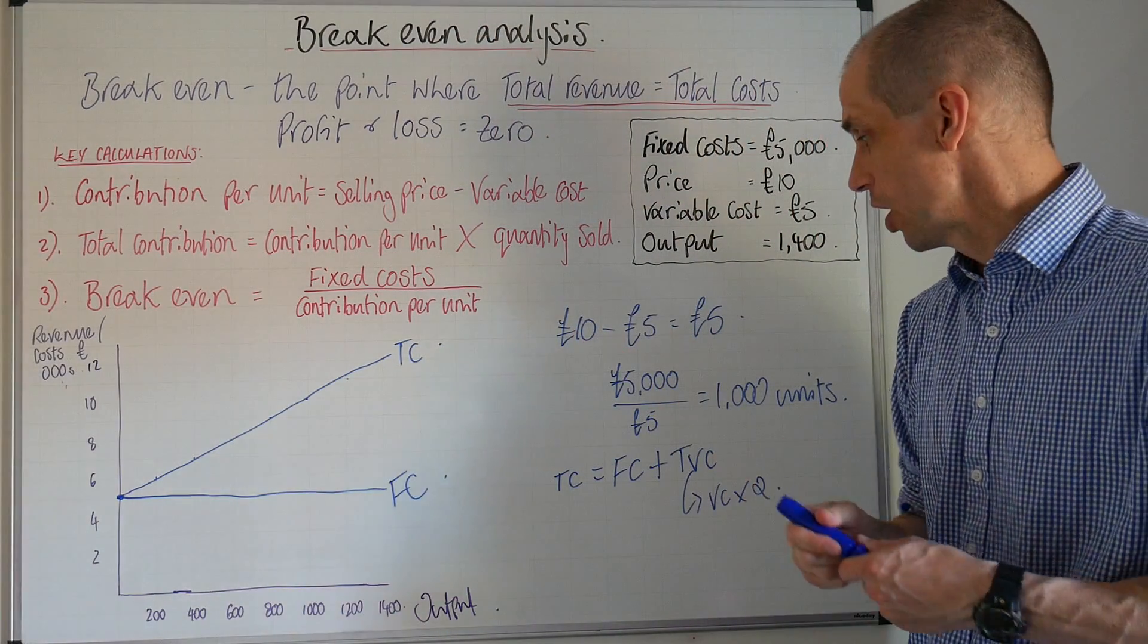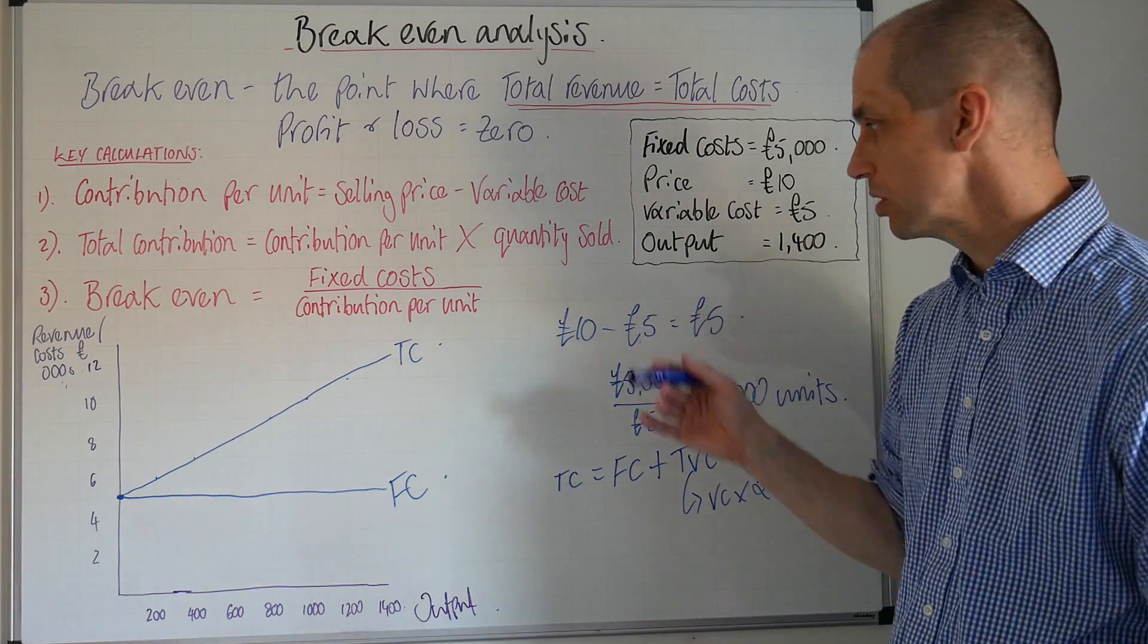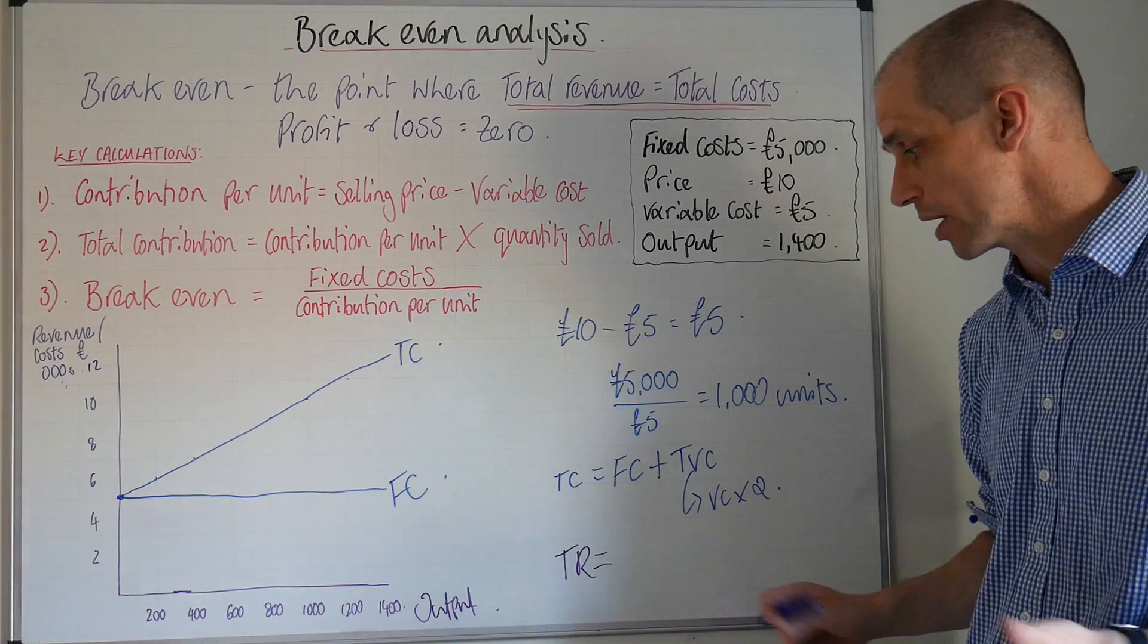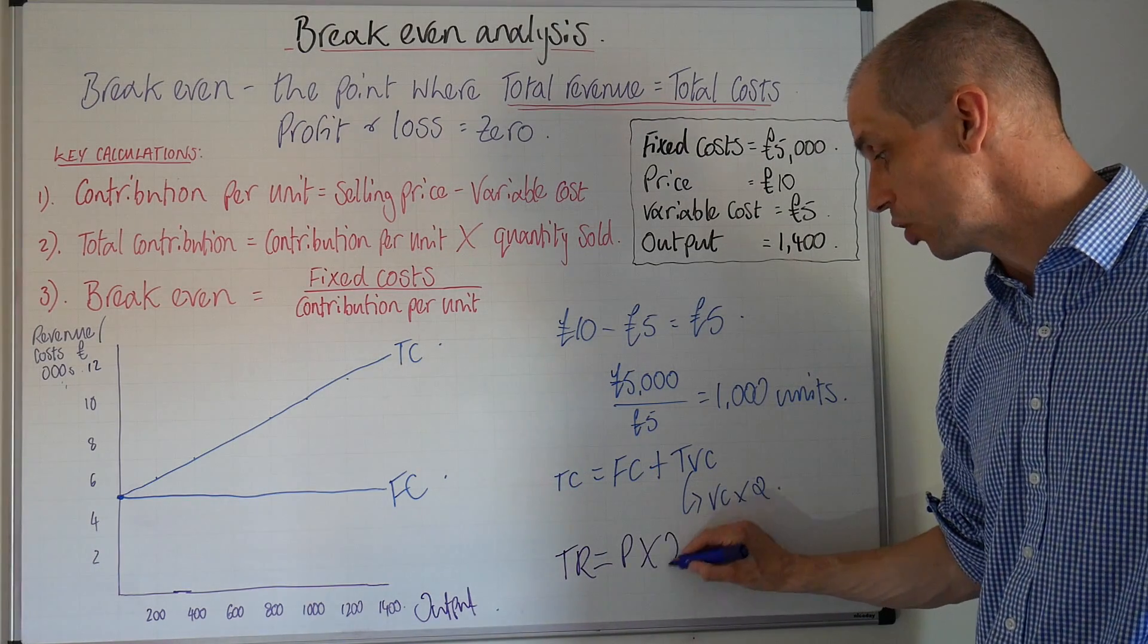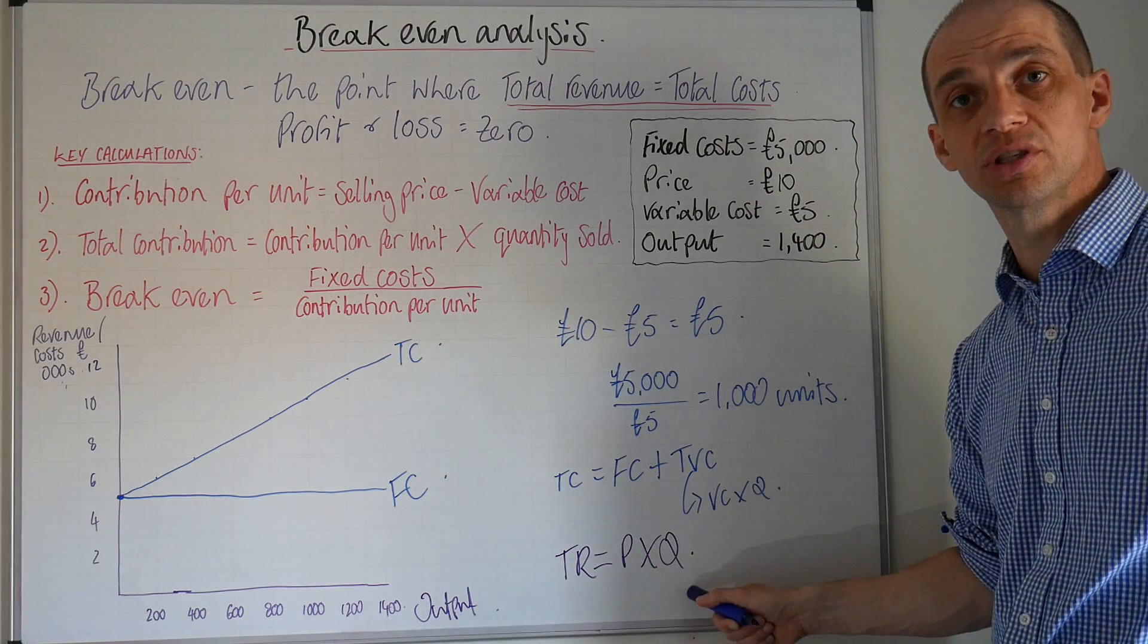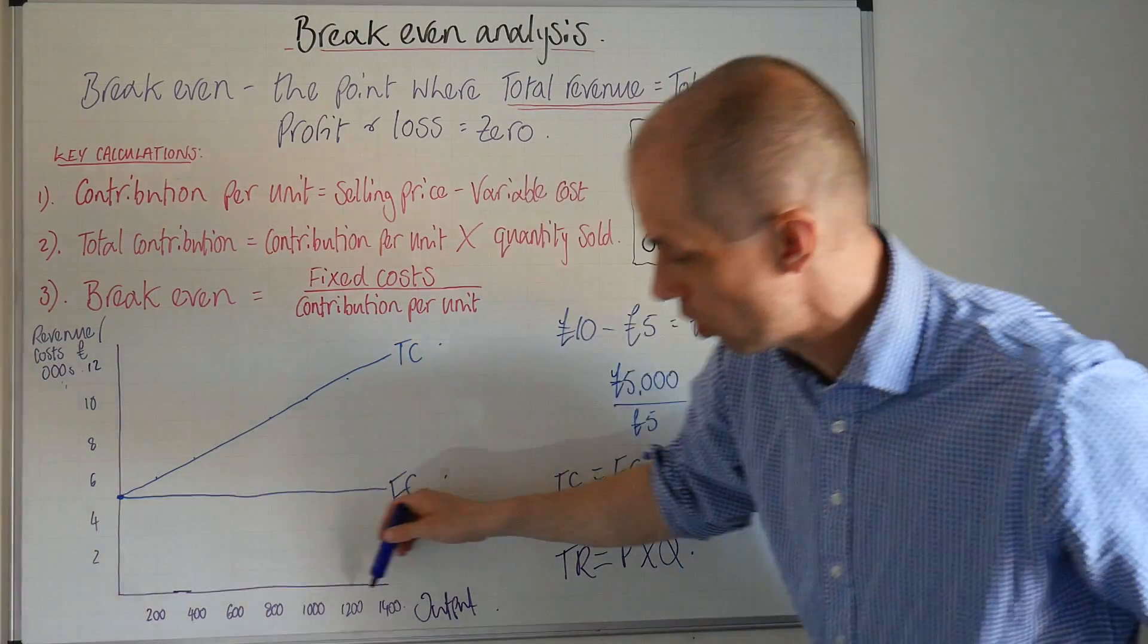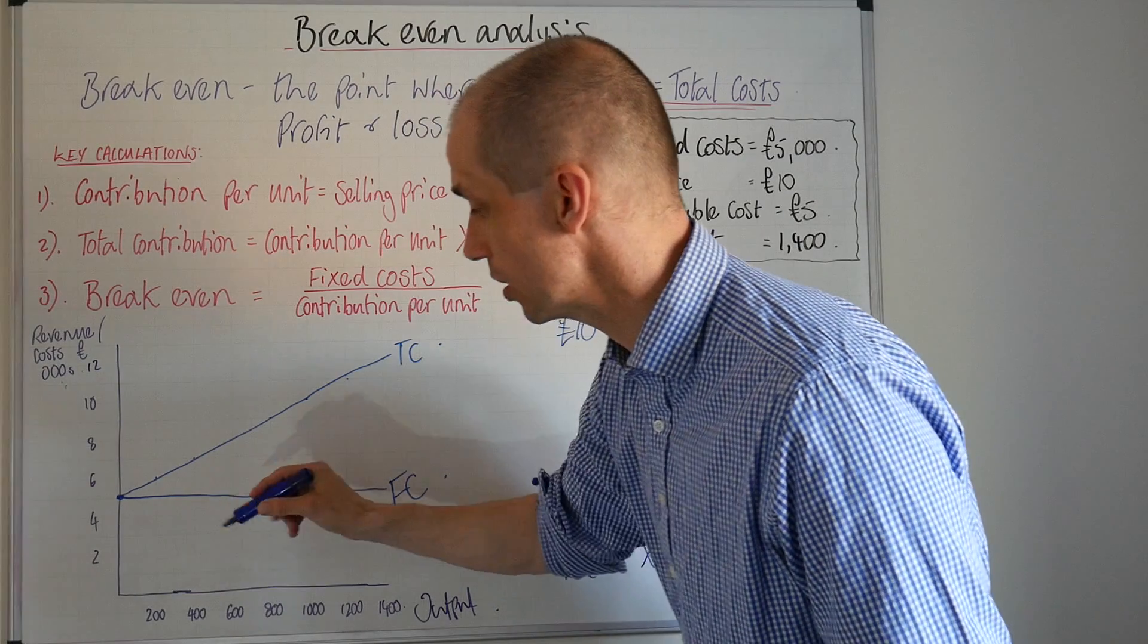So let's now turn our eyes and our attention to the revenue. The total revenue that the business can actually generate is calculated by the price times the quantity sold or the output level. Price times quantity. So here we've got a price of £10 and we've got our quantities or our outputs along our horizontal axis.